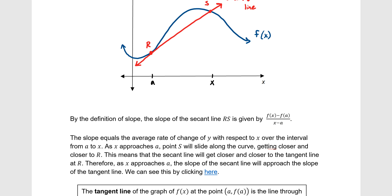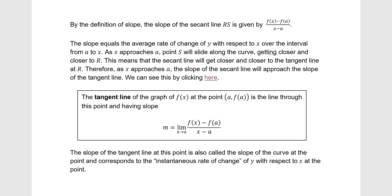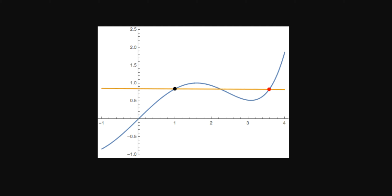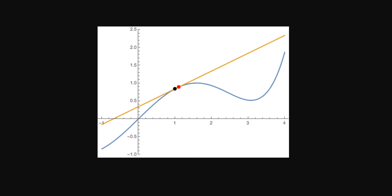Now we let point S get closer and closer to fixed point R, meaning x approaches a. As it does, the secant line gets closer and closer to the tangent line at R. Visually, point R is the black dot on the left and point S is the red dot on the right. As the red dot moves toward the black dot, the secant line approaches the tangent line at that point.